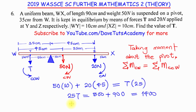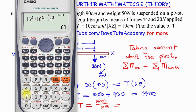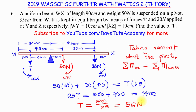Therefore, force T equals 1400 divided by 25, which gives 56 N. We were able to get this answer by interpreting the question appropriately, finding the distance from each active point to the pivot, taking moments about the pivot, and solving to get the value of force T as 56 N.